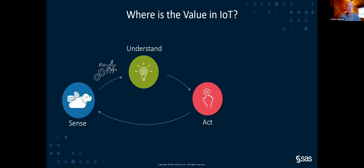We need a mechanism to ingest that data — adapters or connectors, as we call them in our event stream processing family. Once data is brought in, many companies haven't yet applied analytics to gain insights and understand what's happening with all the data they're bringing in about those things or people they're interacting with.